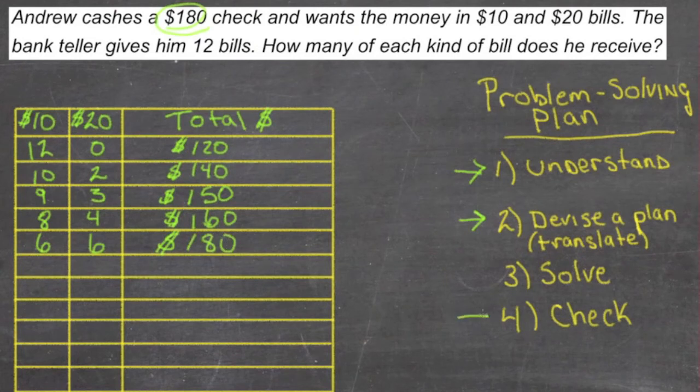So let's see if that checks out. We're going to check it out by going backwards. If we had 180 dollars to get and we were given six 20s, then that would be 120 dollars. And then if we were given six 10s, that would be 60 dollars.